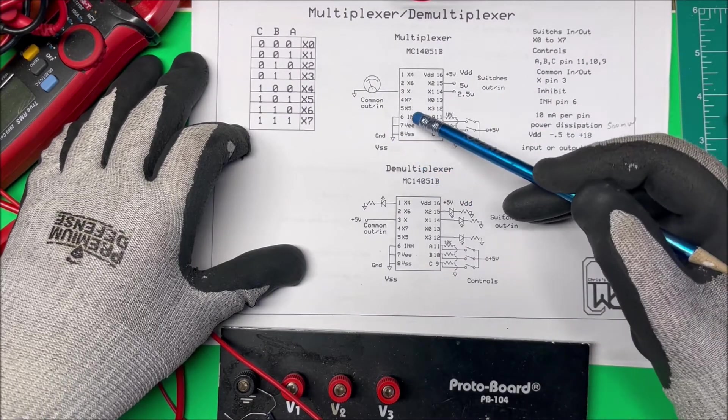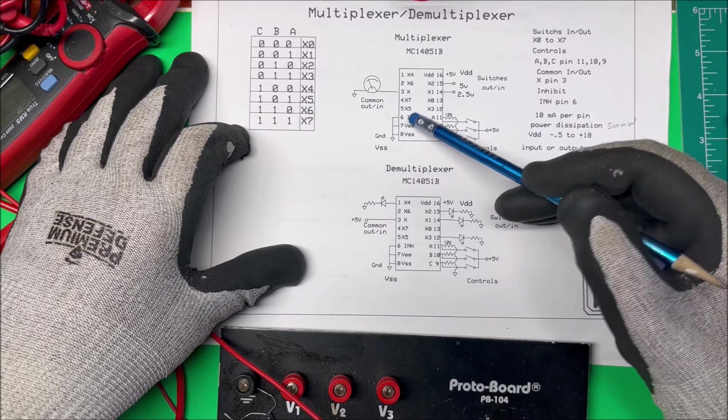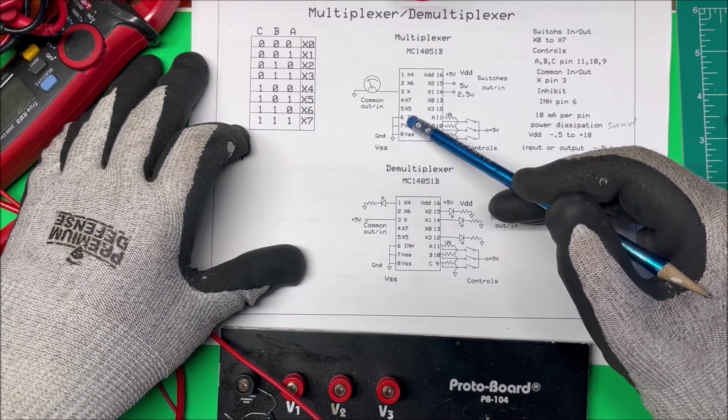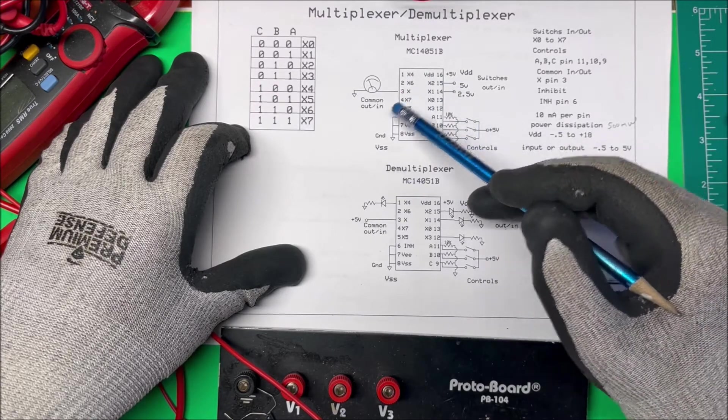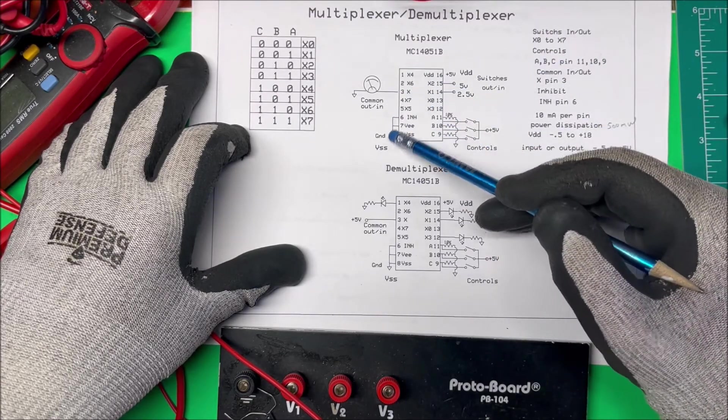Now to ground over here, I'm going to ground the VE VSS, and then this inhibit pin—if the inhibit pin goes high, then all these switches open up and you get nothing on the output. So I'm just going to keep that low.